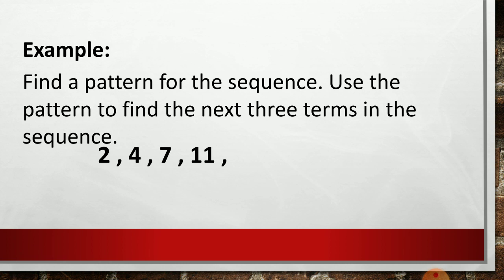Example — find a pattern of the sequence and use the pattern to find the next three terms. From the given sequence: 2, 4, 7, 11. Observe that the difference between 4 and 2 is 2, and the difference between 7 and 4 is 3, and so on — the difference between consecutive numbers increases by 1. So, add 5 to 11 to get the next term: 11 + 5 = 16. Then add 6 to get the next term, and so on. Therefore, the next three terms in the sequence will be 16, 22, and 29.